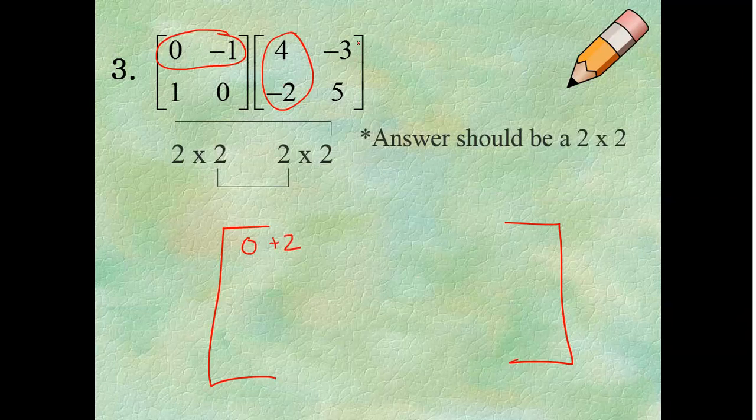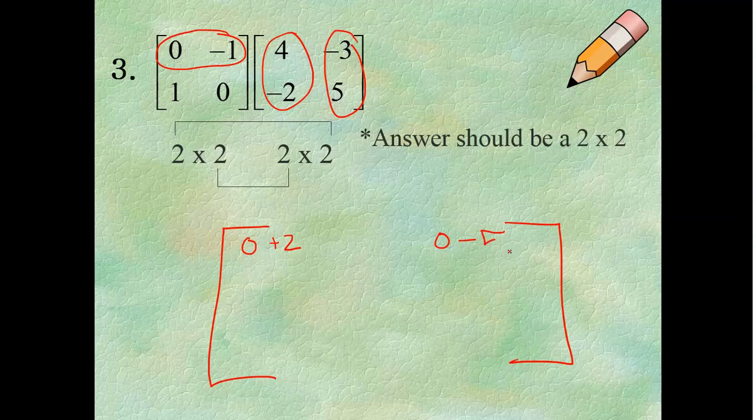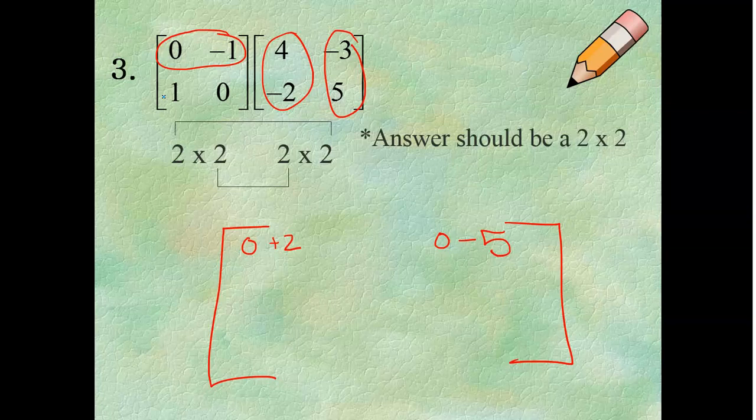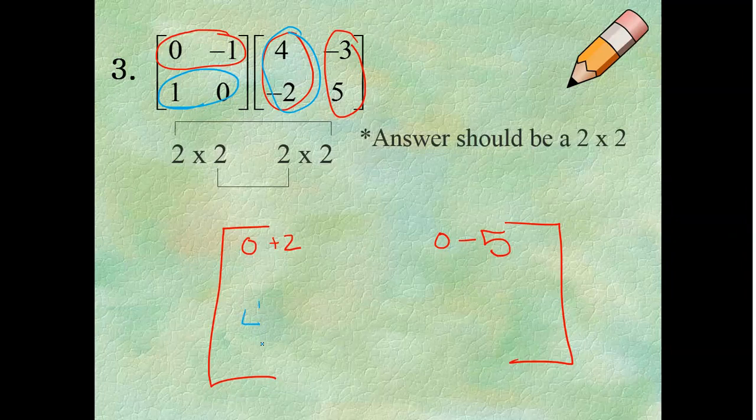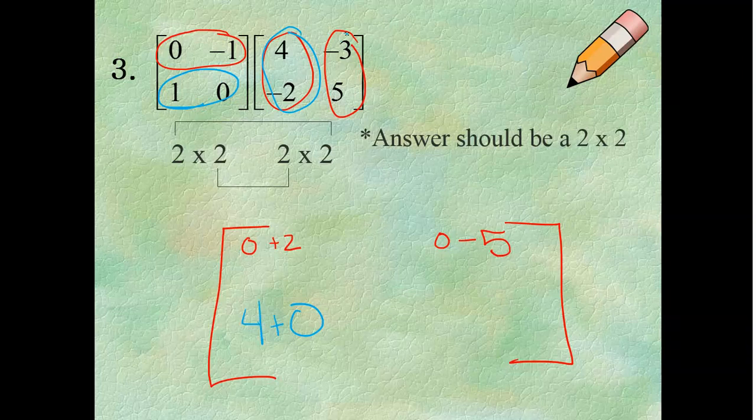This row by that column. So, 0 times negative 3 is 0. And negative 1 times 5 is negative 5. Let me switch colors here so we can see it. 1, 0 and 4, negative 2. So, 1 times 4 is 4. 0 times negative 2 is 0. 1 times negative 3 is negative 3. And 0 times 5 is 0.